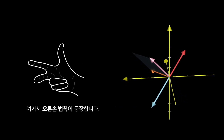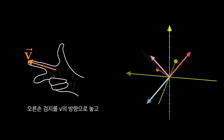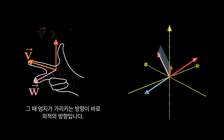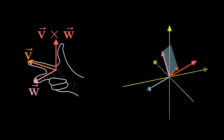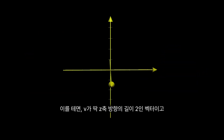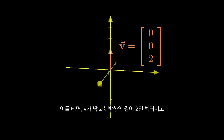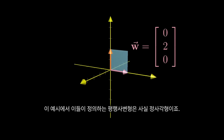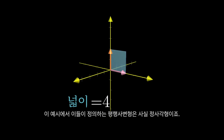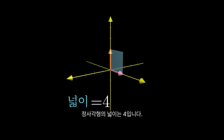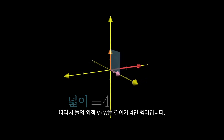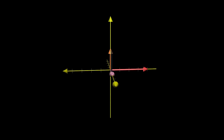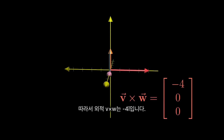This is where the right-hand rule comes in. Point the forefinger of your right hand in the direction of v, then stick out your middle finger in the direction of w, then when you point up your thumb, that's the direction of the cross product. For example, let's say that v was a vector with length 2 pointing straight up in the z direction, and w is a vector with length 2 pointing in the pure y direction. The parallelogram that they define is actually a square, since they're perpendicular and have the same length, and the area of that square is 4. So their cross product should be a vector with length 4. Using the right-hand rule, their cross product should point in the negative x direction. So the cross product of these two vectors is negative 4 times i hat.